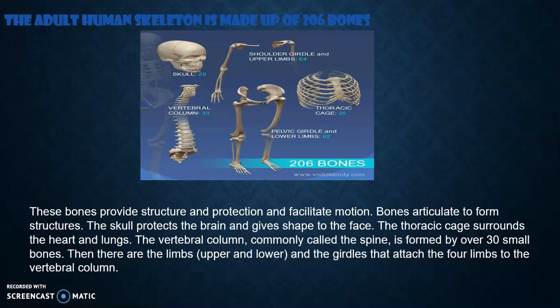Cartilage is also found between the vertebrae and at the ends of bones like the femur. The adult human skeleton is made up of 206 bones, which provide structure and protection and facilitate motion. Bones articulate to form structures — the skull protects the brain and gives shape to the face, the thoracic cage surrounds the heart and lungs, and the vertebral column, commonly called the spine, is formed by over 30 small bones. There are also the limbs, upper and lower, and the girdles that attach the four limbs to the vertebral column.